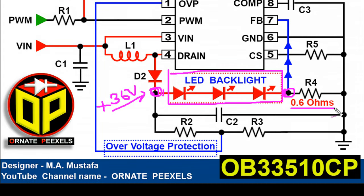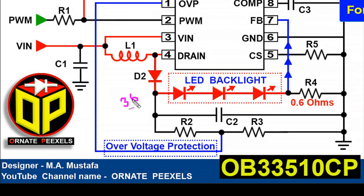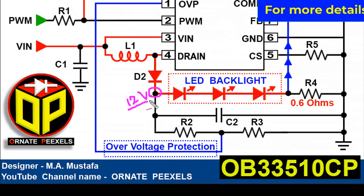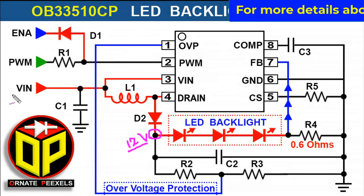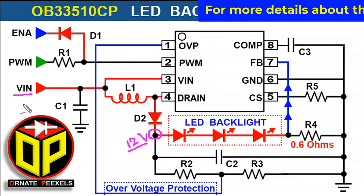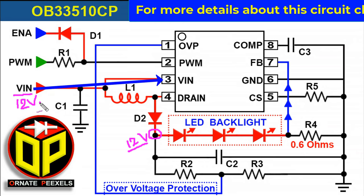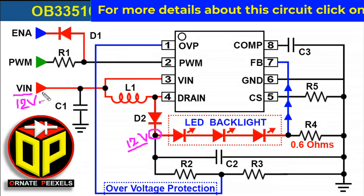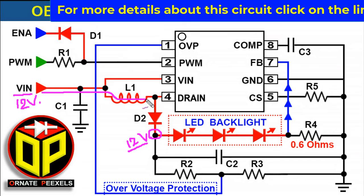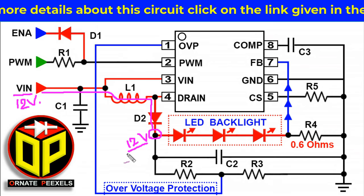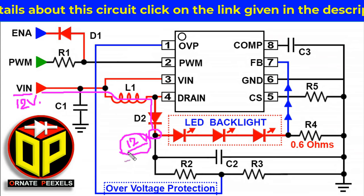Now try to understand: here we need 36 volts, but we measured only 12 volts. Why 12 volts instead of 36 volts? This is the VIN or voltage input terminal — 12 volts is supplied here for circuit operation. From here, through the inductor and rectifier, 12 volts is coming. So where will 36 volts come from?